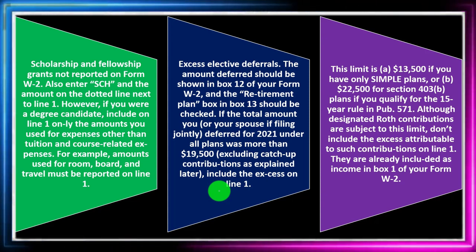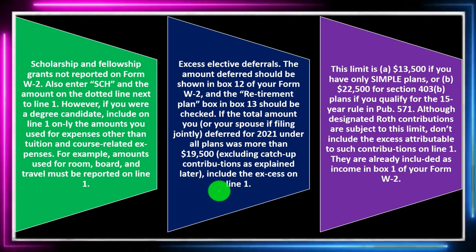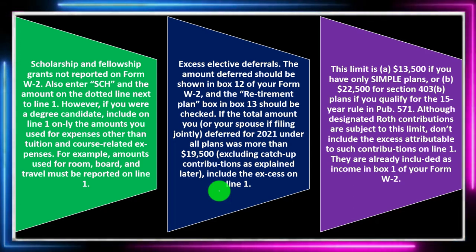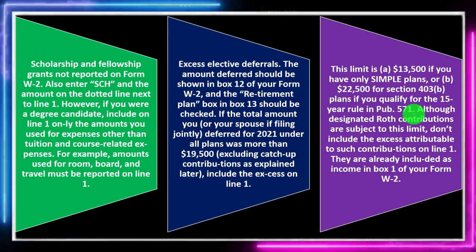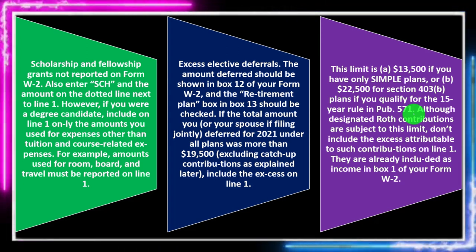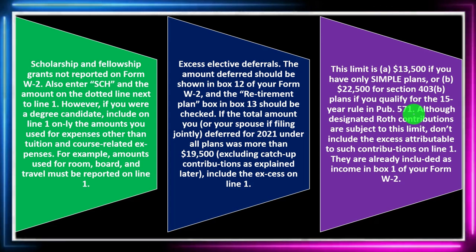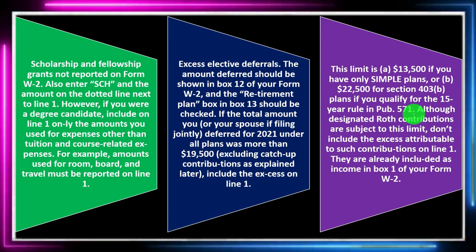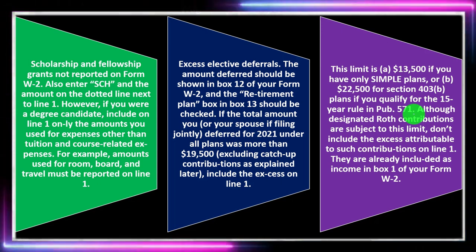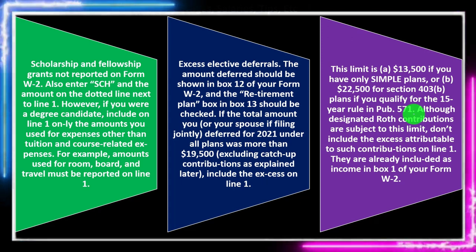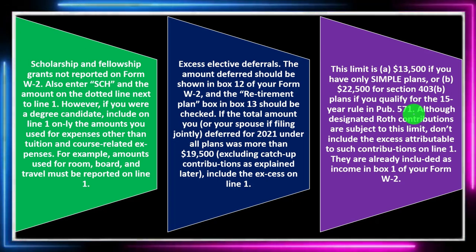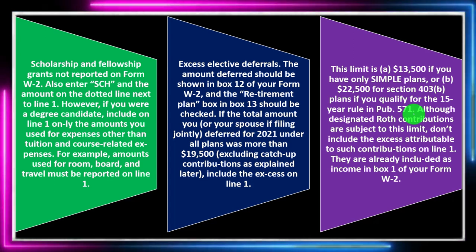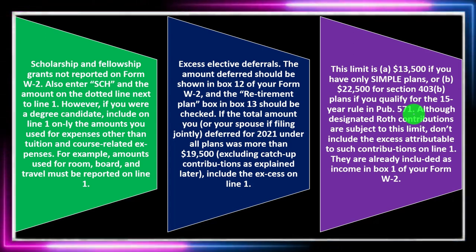The deferral limit is $13,500 for SIMPLE plans, or $22,500 for Section 403(b) plans if you qualify for the 15-year rule under Publication 571. Retirement plan types — 403(b) for government entities, SIMPLE for smaller businesses, 401(k) — all have limits on contributions. If you're age 50 or older at the end of 2021, your employer may have allowed catch-up contributions of up to $6,500 ($3,000 for Section 401(k)(11) and SIMPLE plans). These are always being adjusted, so the question is whether you maxed out or exceeded the limits — and what to do if you went over.